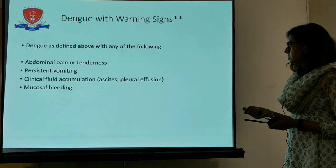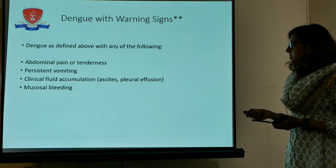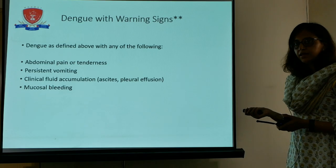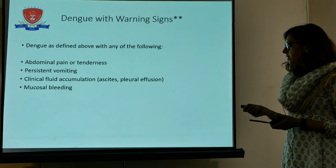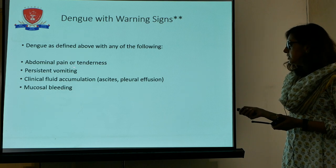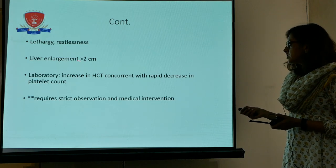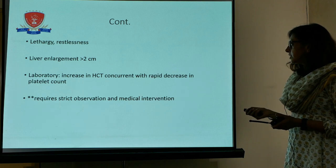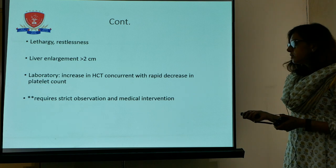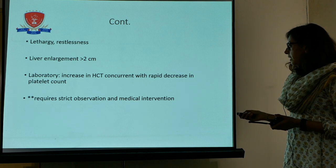Dengue with warning signs is important. It is defined as dengue as above plus any of the following: abdominal pain or tenderness, persistent vomiting, clinical fluid accumulation due to capillary leak syndrome such as ascites or pleural effusion, or mucosal bleed. Clinical fluid accumulation in the form of ascites or pleural effusion is very important. Lethargy or restlessness, liver enlargement, or an increase in hematocrit concurrent with a rapid decrease in platelet count would also classify the patient as dengue with warning signs — this is the time when you have to act very quickly.